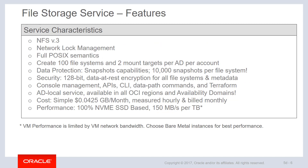Looking at a few key service characteristics: FSS utilizes NFS v3 with fully POSIX compliant semantics. Customers are able to create up to 100 file systems within their OCI region, with two mount targets per availability domain. In addition to snapshot capability, all of the data is automatically encrypted at rest and in transit. The cost is very straightforward — there are no hidden charges and no tiered pricing. It's simply a flat rate of 4.25 cents per gig per month, measured hourly, based on actual consumption.